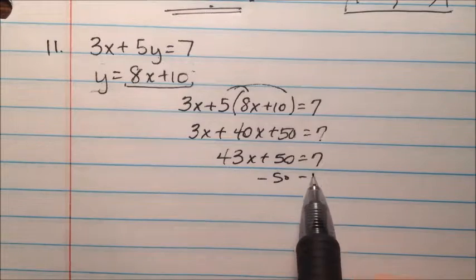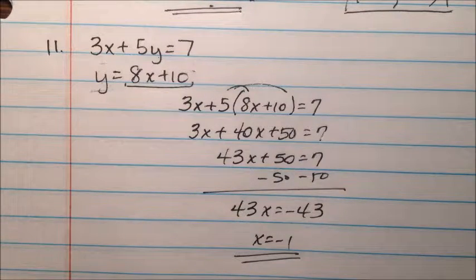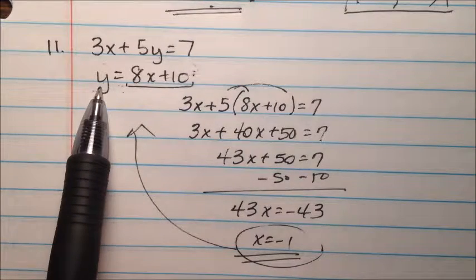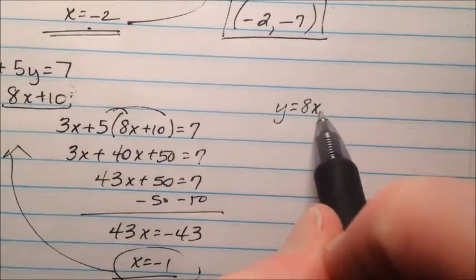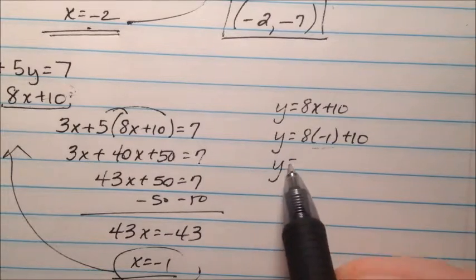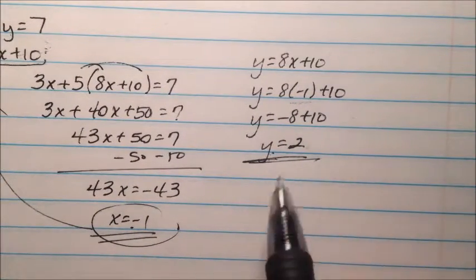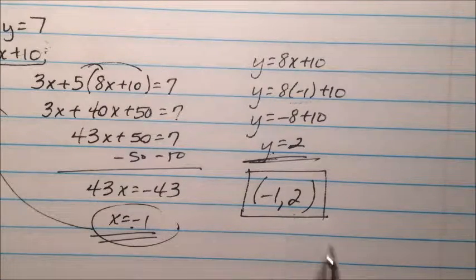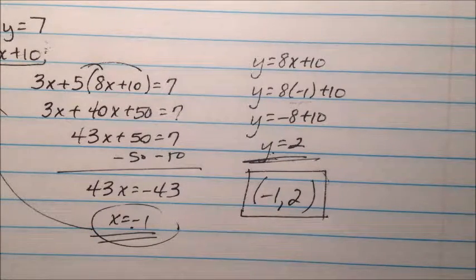When we subtract 50 from both sides, we get 43x equals negative 43, which means x is equal to negative 1. We plug negative 1 back into the equation already solved for y: y equals 8x plus 10. So y equals negative 8 plus 10, which is 2. So x is negative 1 and y is 2, giving us the ordered pair negative 1, 2. If you're going to classify this system, it's going to be consistent and independent.